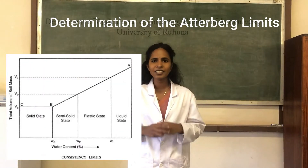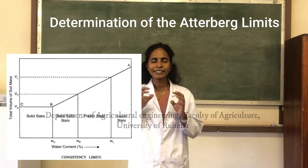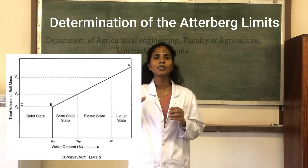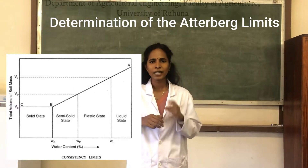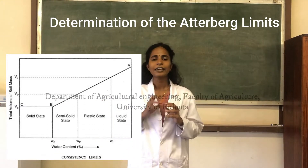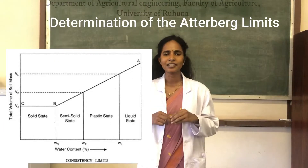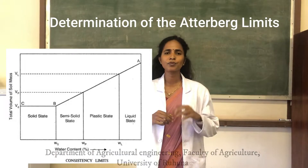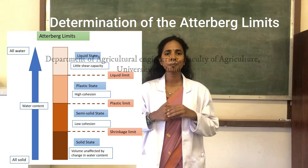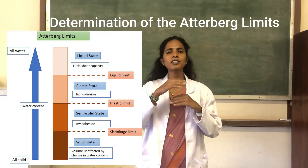When the drying process is continued, the liquid state soil is converted into the plastic state soil. At this stage, it can be molded into desired shapes without any cracks or ruptures. But when further dried, it converts to a semi-solid state where it cannot be molded without cracking. The boundary water content at which the soil changes from plastic to semi-solid is identified as the plastic limit, which lies between the plastic and semi-solid states.